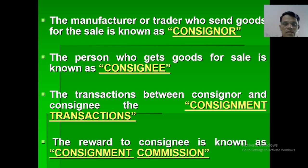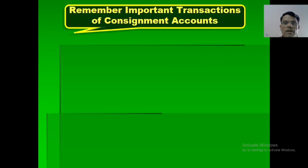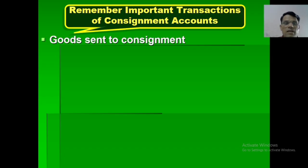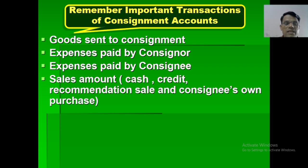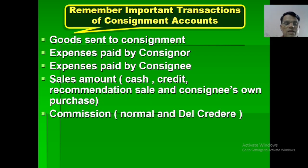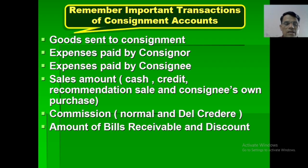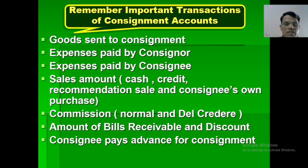The payment to the consignee is known as consignment commission. Important transactions of a consignment account include: goods sent on consignment, expenses paid by consigner, expenses paid by consignee, sales amount — cash sales, credit sales, and consignee's own purchases. Commission has two types: normal and del credere. Amount of bills receivable and discount, and consignee's advance payment for consignment.